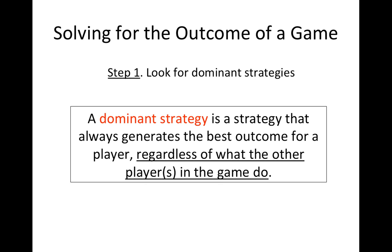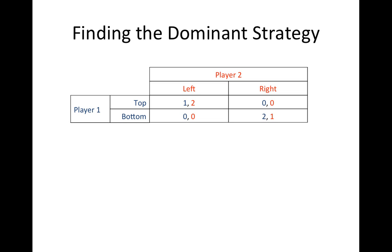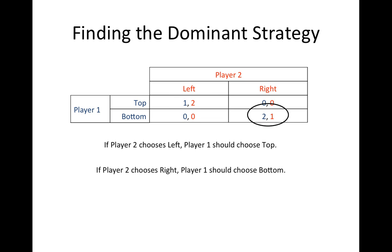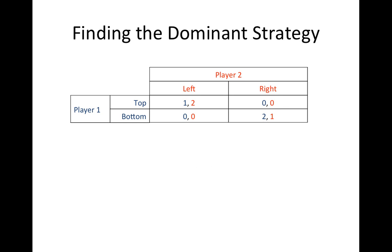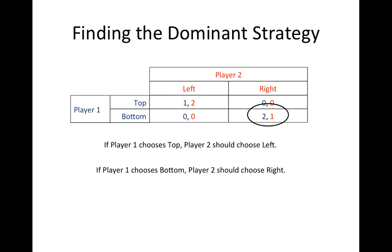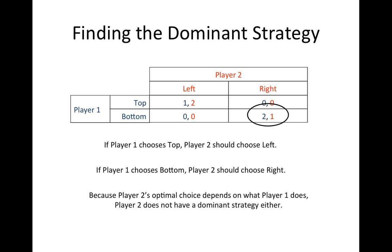The important part of this definition is that a dominant strategy is the best thing for a player to do no matter what the other players in the game do. Let's use our example game to see if either player has a dominant strategy. If player 2 plays left, then player 1's optimal choice is to choose top. If player 2 chooses right, then player 1 should choose bottom. Because player 1's optimal choice depends on what player 2 does, player 1 does not have a dominant strategy. Similarly, because player 2's optimal choice depends on what player 1 does, player 2 does not have a dominant strategy.